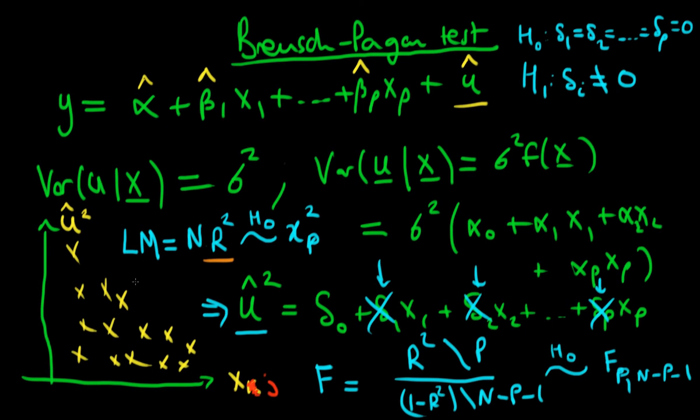Normally statistical programs implement this LM form of the Breusch-Pagan test, though some report both. These are two variations on the same thing — not absolutely identical, but both test for more generalized forms of heteroskedasticity than the Goldfeld-Quandt test. In the next video we're going to talk about an even more general test for heteroskedasticity called the White test. I'll see you then.